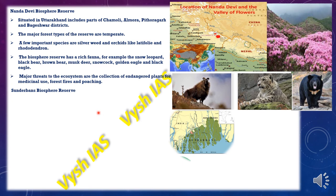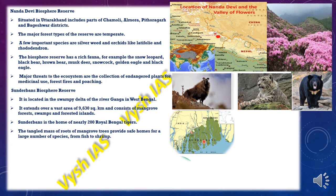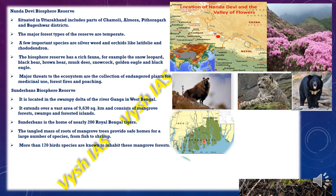The Sundarbans Biosphere Reserve is located in the swampy delta of the river Ganga in West Bengal. It extends over a vast area of 9630 square kilometers and consists of mangrove forests, swamps and forested islands. This region is home to nearly 2000 Royal Bengal tigers. The tangled roots of the trees provide safe hiding spaces for a large number of species like fish and shrimp, and more than 170 bird species are known to inhabit these mangrove forests.